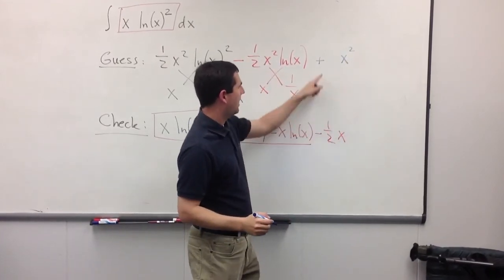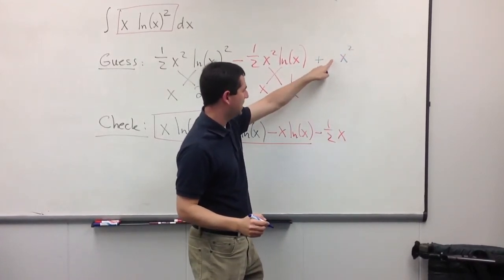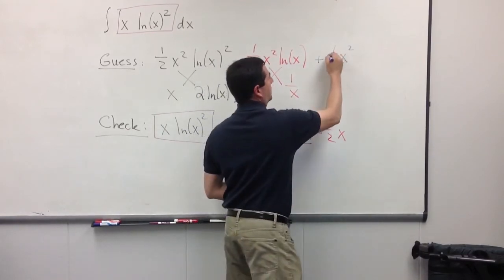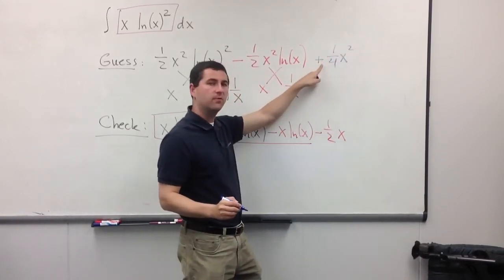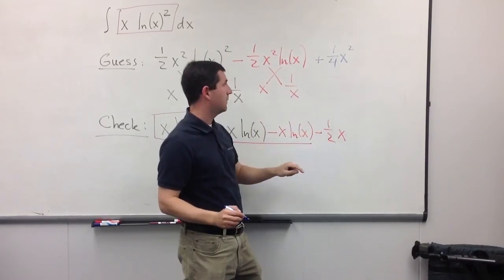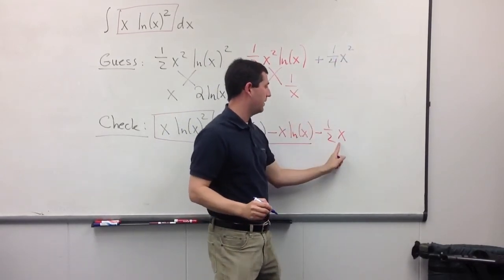And then, I say, well, okay, I would bring this 2 down. That would give me a 2, but I want a half. So, to compensate, I put a fourth here. Now, look. 2 times a fourth is a half. Right? The exponent will drop 1, and that's exactly what I'll get.